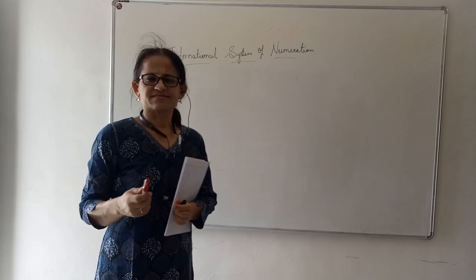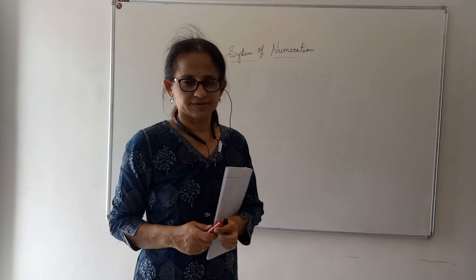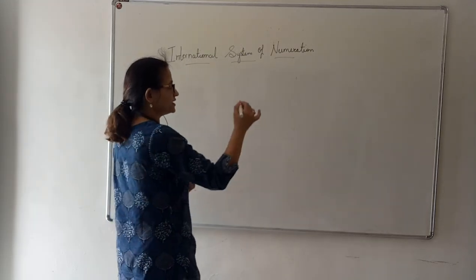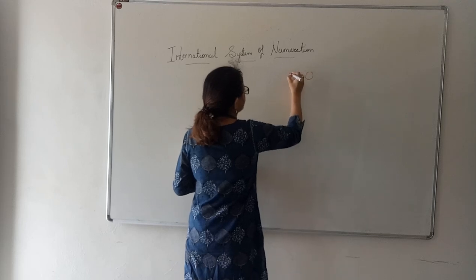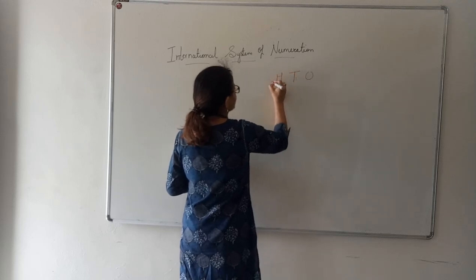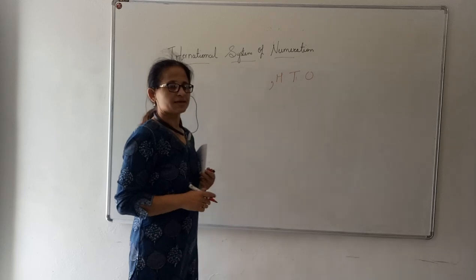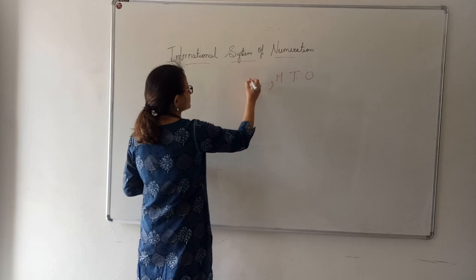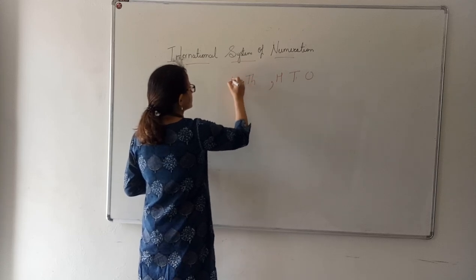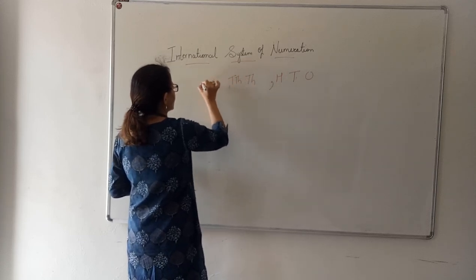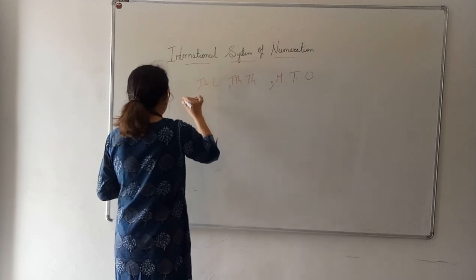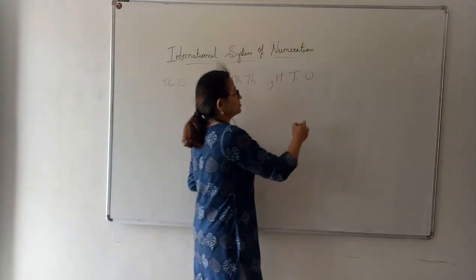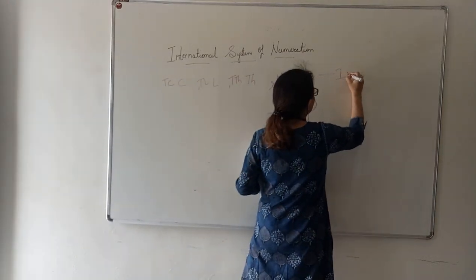It is very simple; this we have also learnt in Form 5. In comparison to the Indian system, in the Indian system we had only 3 members in the first family, and all the rest of the families had 2 members: 1, 10, 100 | 1,000, 10,000 | lakh, 10 lakh | crore, 10 crore. This was the Indian system of numeration.